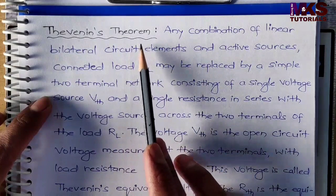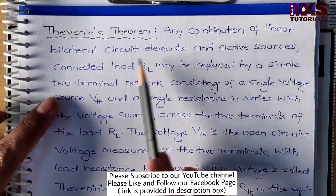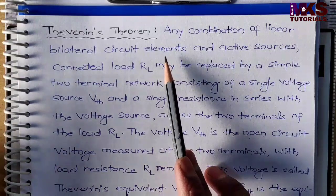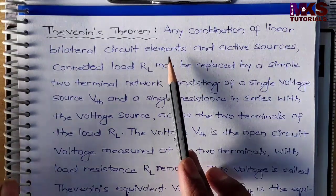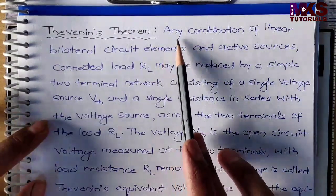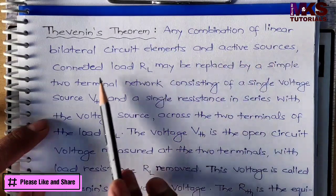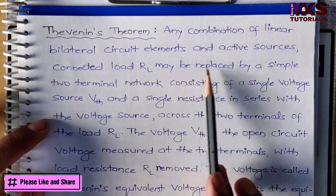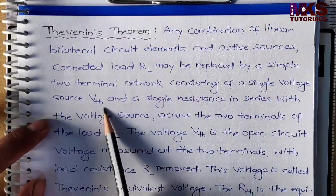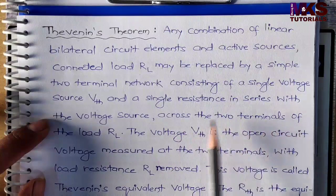Thevenin's theorem: Any combination of linear bilateral circuit elements and active sources connected to a load RL may be replaced by a simple two-terminal network consisting of a single voltage source VTH and a single resistance in series with the voltage source, across the two terminals of the load RL.